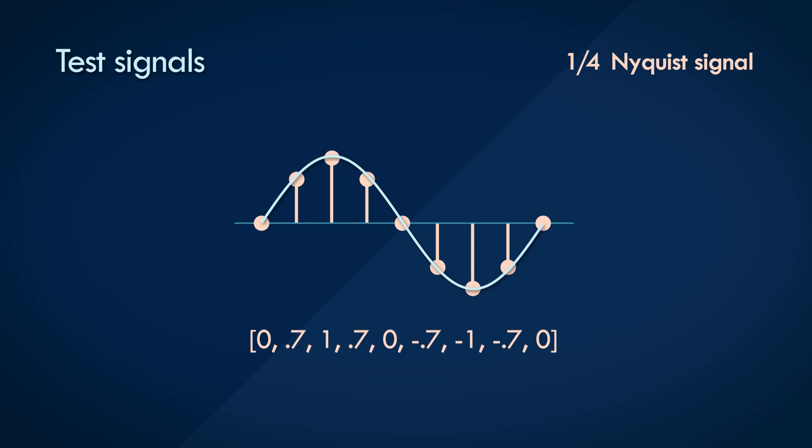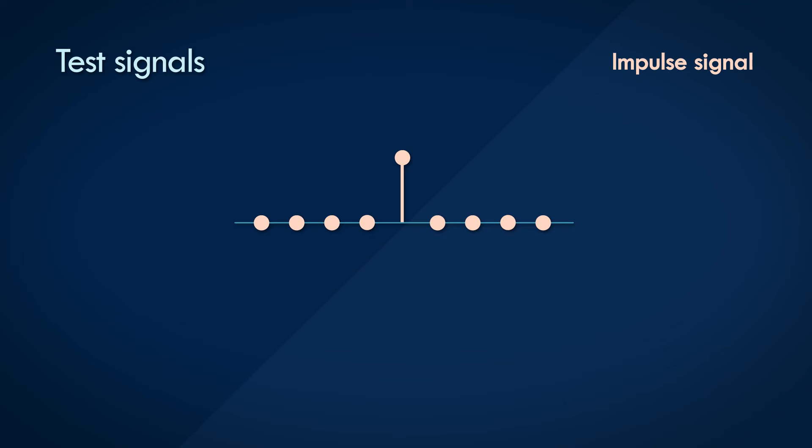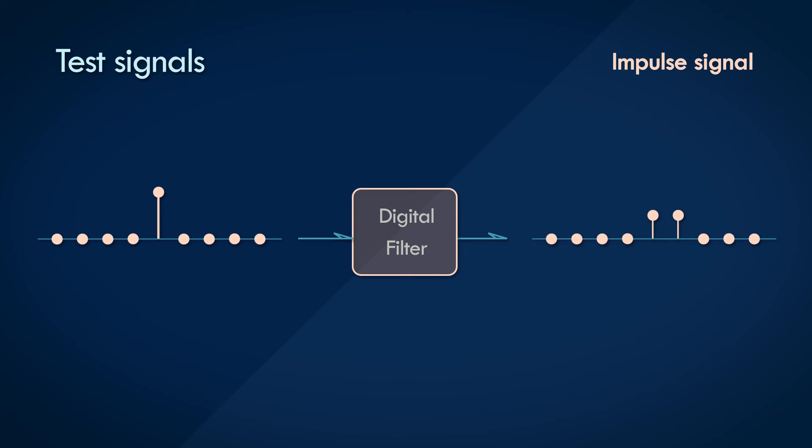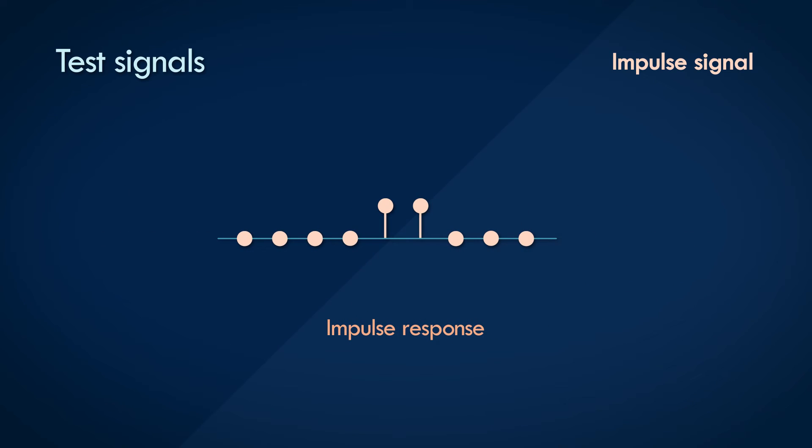And finally, we have a test signal called the impulse signal. This is a special case and is quite important to describe the system. An impulse signal is made up of a single sample value of 1 in an infinitely long stream of zeros. As the name suggests, it's a singular impulse, a tiny flick of an input. If you take this input signal and pass it through a DSP filter, the output of the algorithm is called the impulse response. The terminology makes sense, right? It's the filter's response to an impulse.